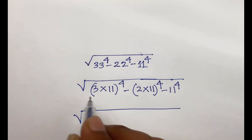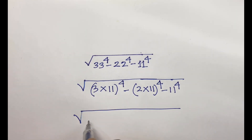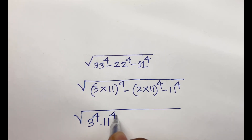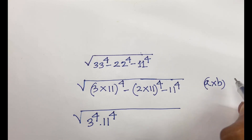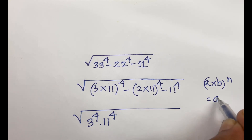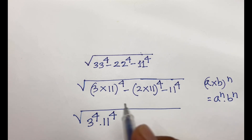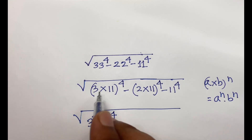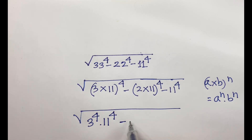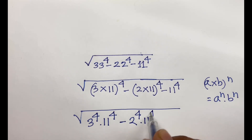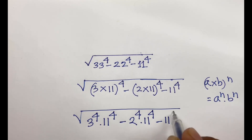It will be 3 to the power 4 times 11 to the power 4, because we know that (a × b)ⁿ = aⁿ × bⁿ. So we can write 3 to the power 4 times 11 to the power 4, minus 2 to the power 4 times 11 to the power 4, minus 11 to the power 4.